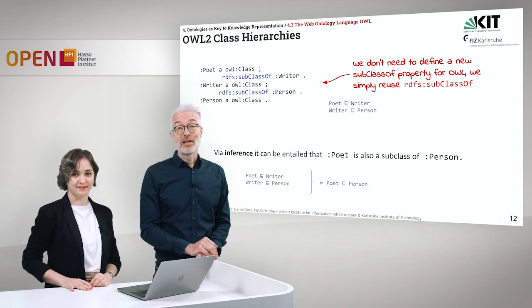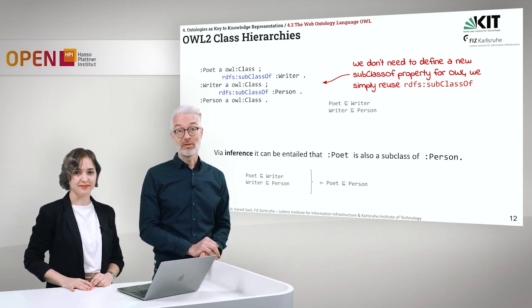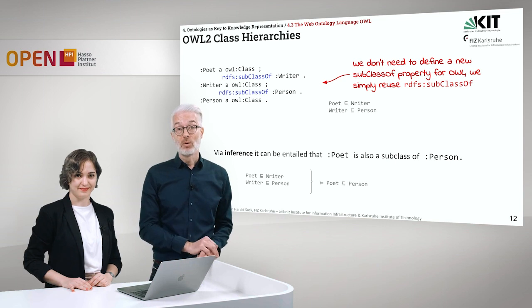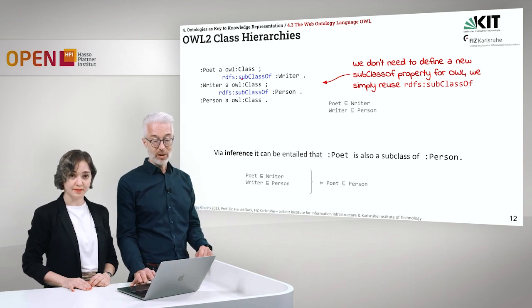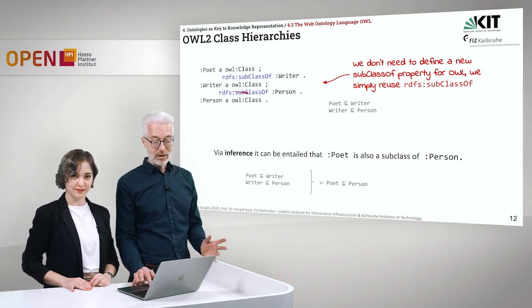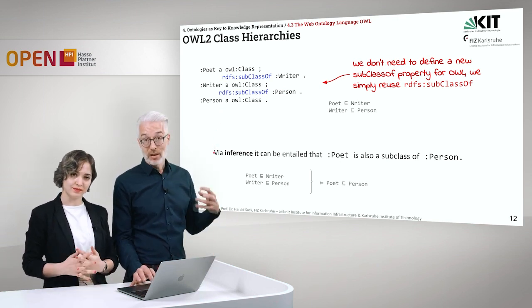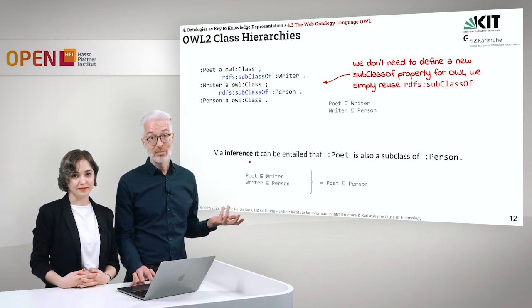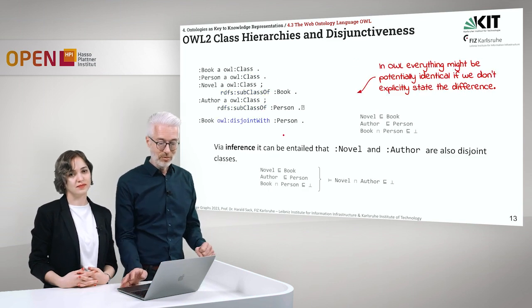We can also define class hierarchies in OWL2, reusing the existing RDFS keyword rdfs:subClassOf, since no additional semantics is introduced that would harm OWL2. For example, Poet is defined as a class and is a subclass of Writer, and Writer is a subclass of Person. Interestingly, via inferencing, it can simply be entailed that Poet is also a subclass of Person, given these two subclass relationships.